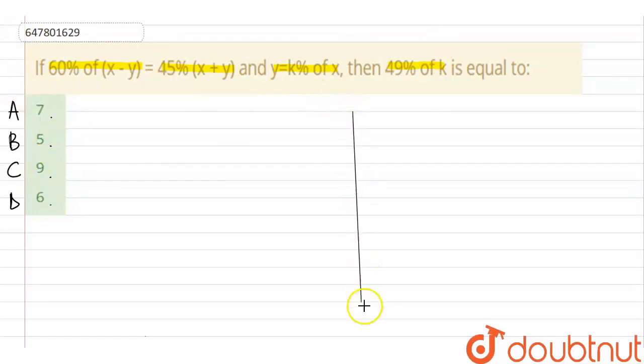So, let us write both the given portions. The first portion that is given is: 60% of x minus y is equals to 45% of x plus y.